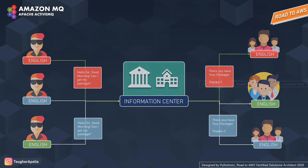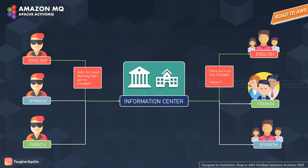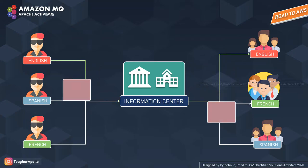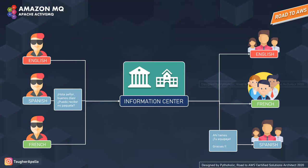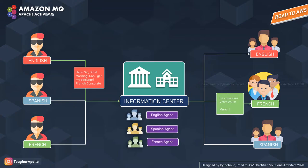Now all of the users were English-speaking and the department was also English-speaking, so the communication was successful. But what will happen if the concerned department was not of the same language? The information center also has the provision for this. The English message was received by the English department, the Spanish department communicated well with Spanish-speaking users, and similarly for French-speaking persons. What if I have to talk to the department of a different language? The information center has deployed agents which allow you to talk to departments with other languages as well.